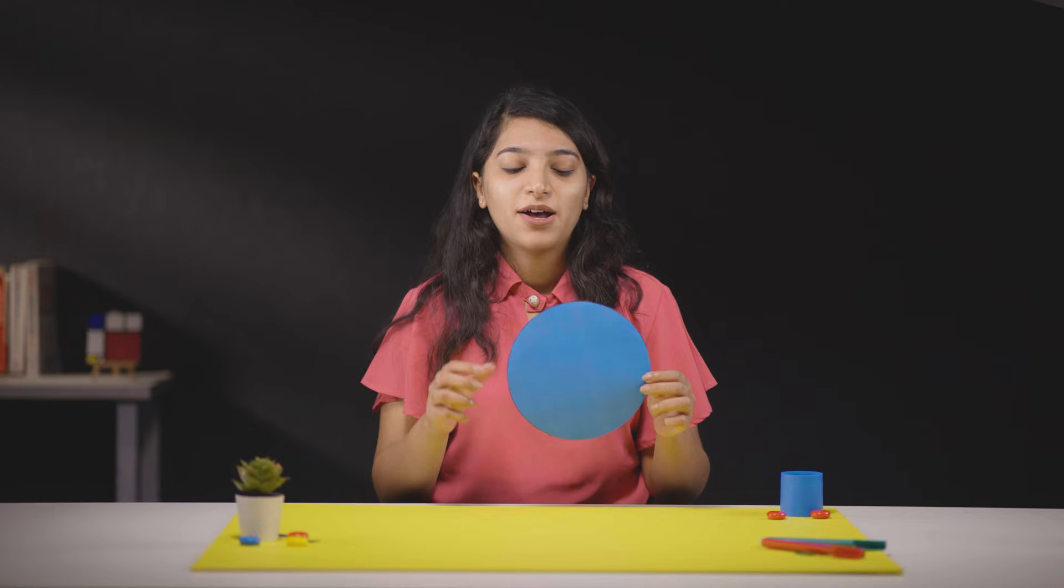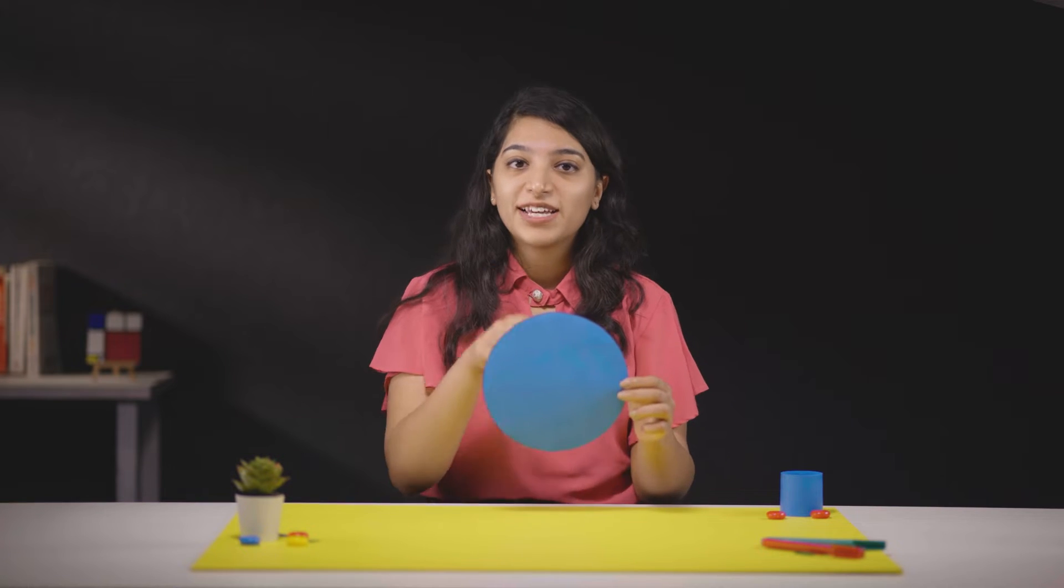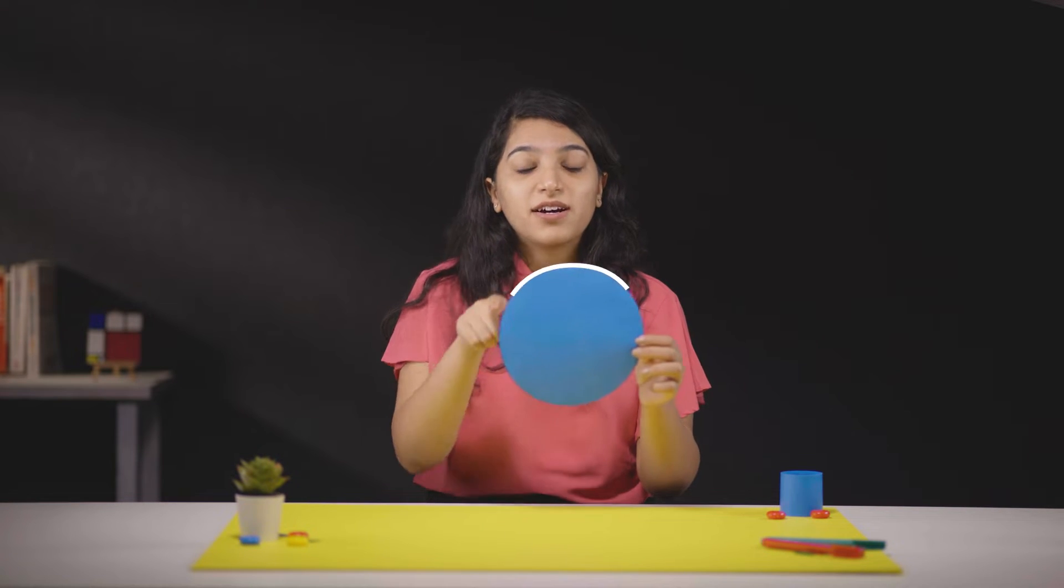But where did this formula come from? Well, it's a bit difficult to find the area of a circle because of its curved boundary.